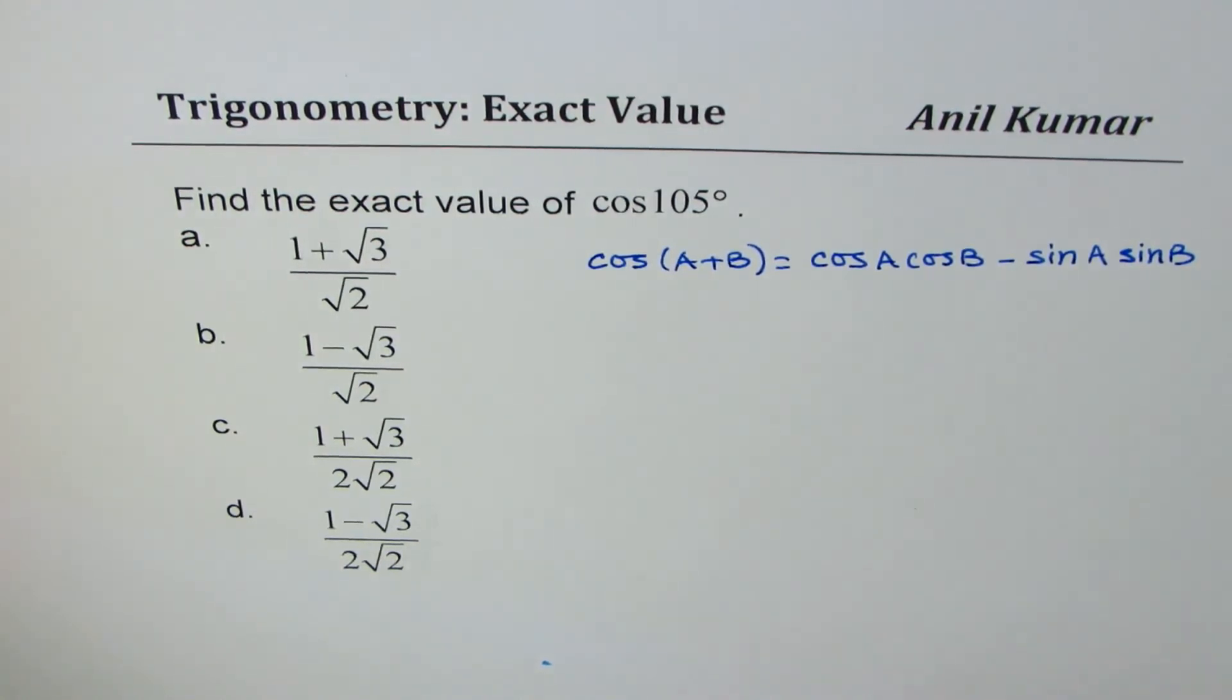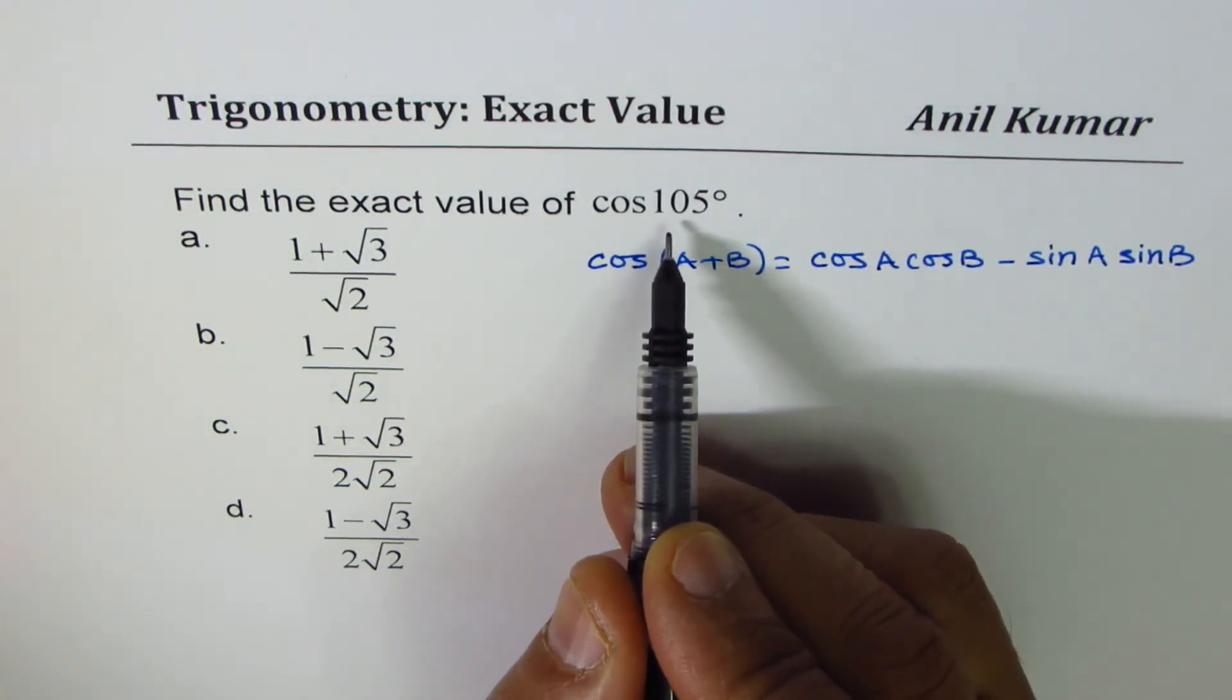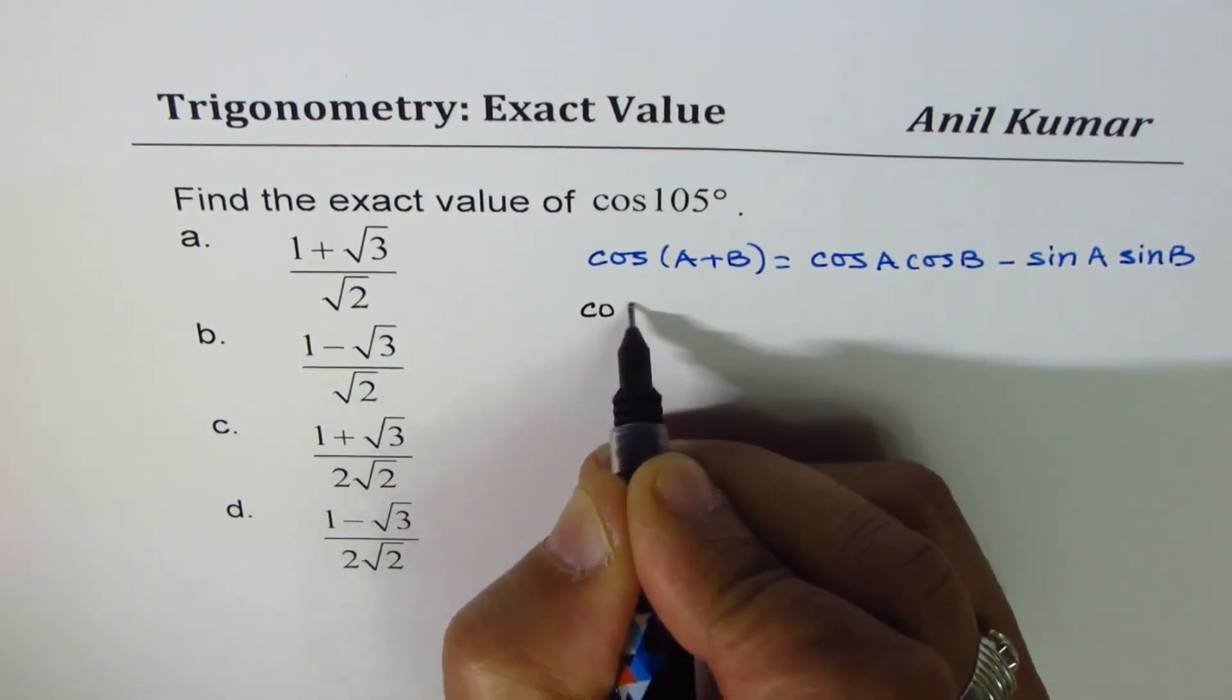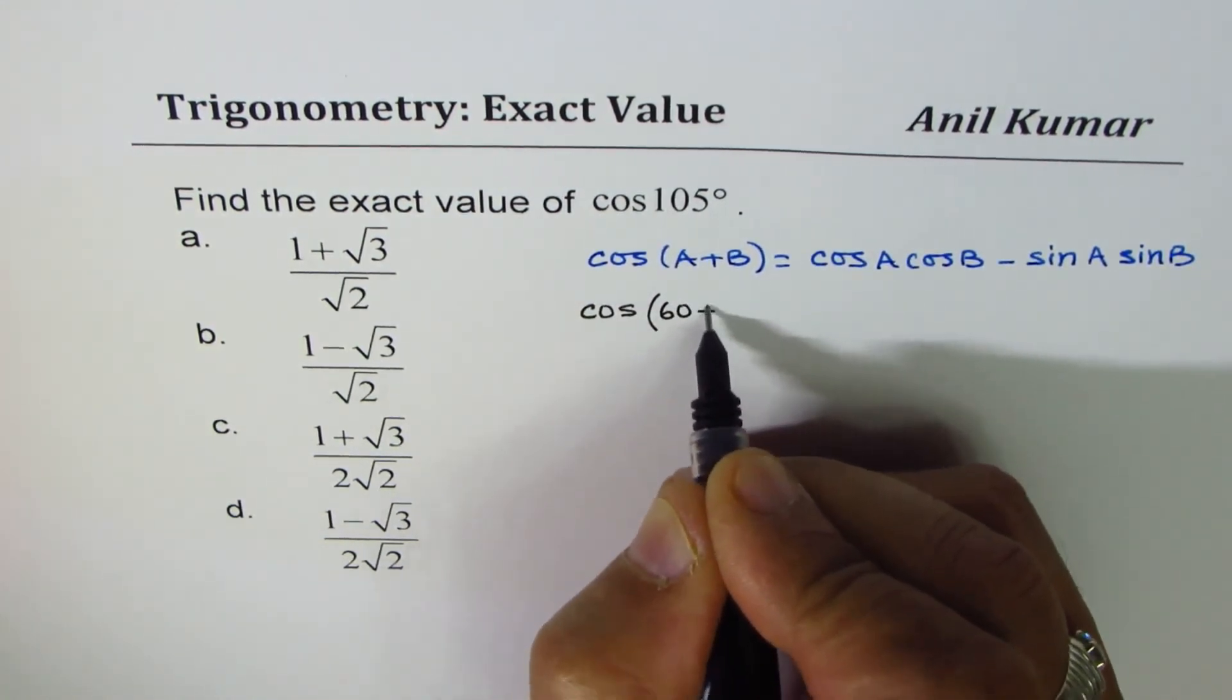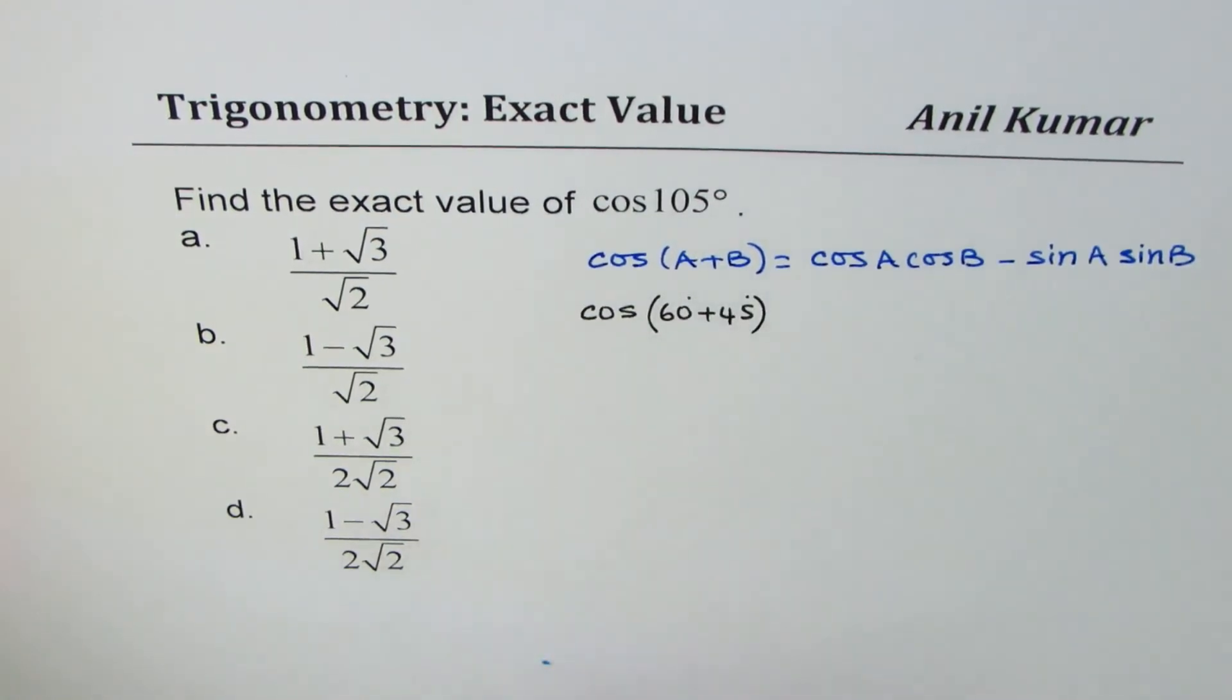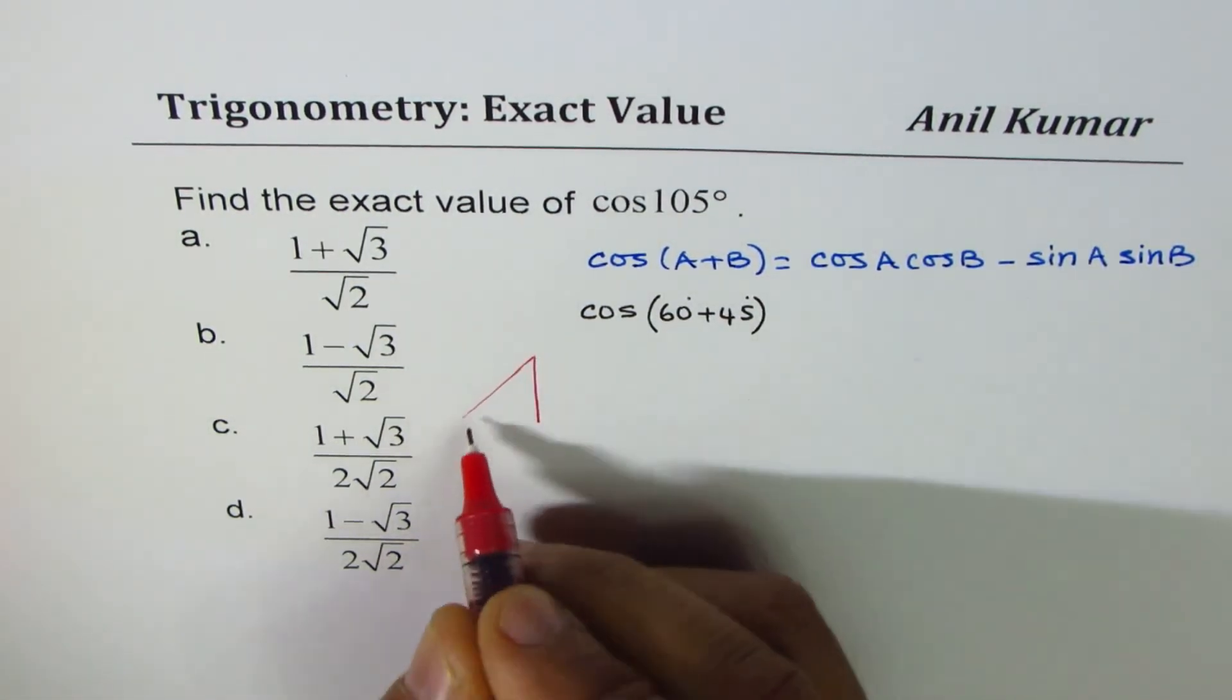105 could be written as a combination of what two special angles? Think about it. It could be 60 plus 45 in degrees. Both are special triangles for which you don't need a calculator.